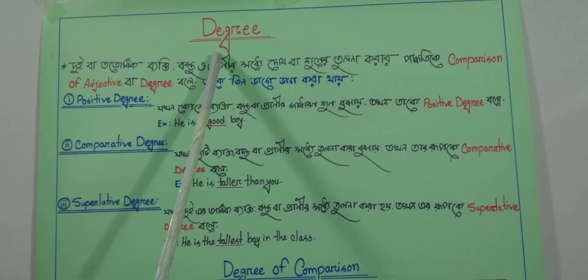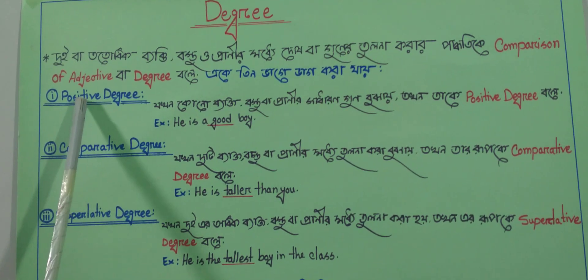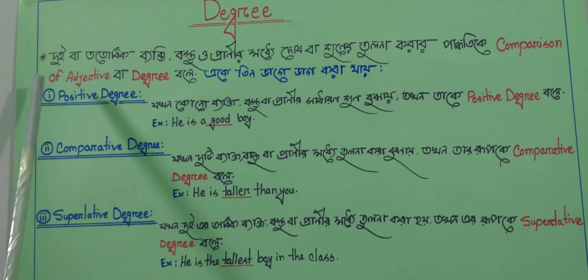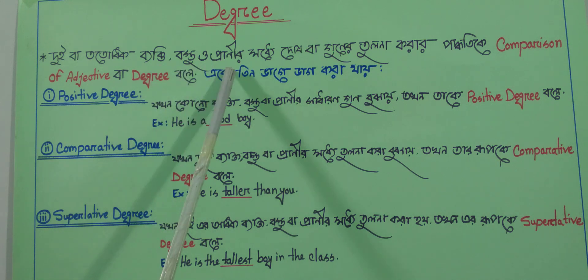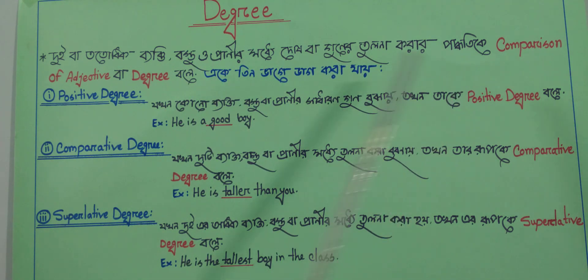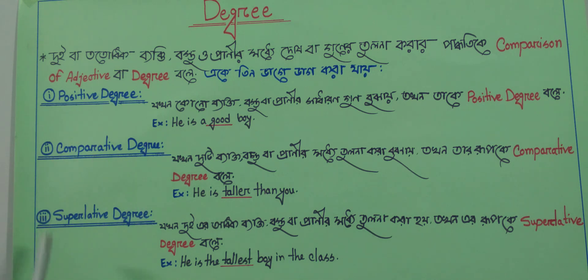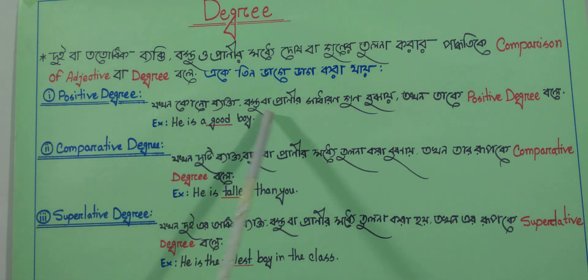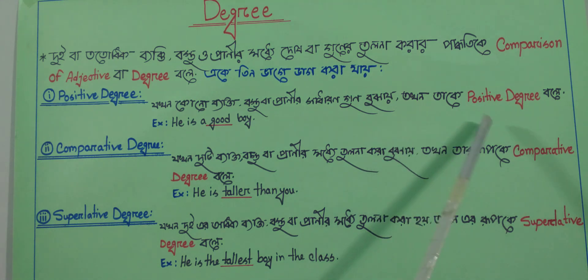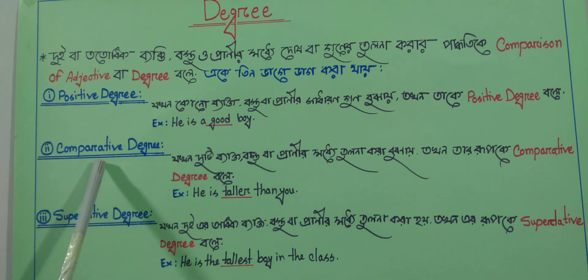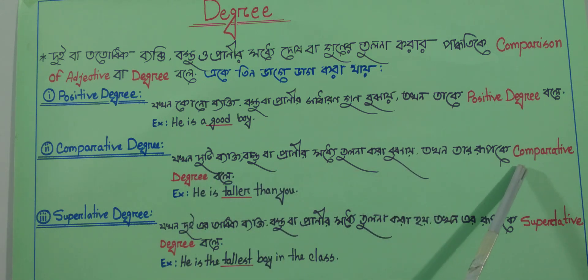At first, let's understand the meaning of Degree. Degree refers to the level or grade of comparison of adjectives. For example, Number 1 is Positive Degree: 'He is a good boy.' Number 2 is Comparative Degree.